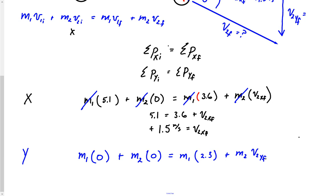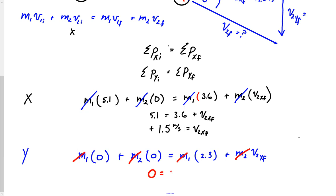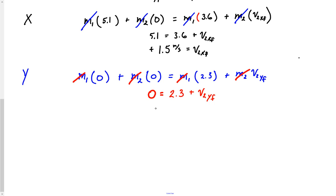Plus m2, and what we are looking for is velocity 2's y final. And once again, what's beautiful is the m's all cancel out, which is kind of cool because that means that 0 is equal to 2.3 plus velocity 2 y final, which, wow, that just means negative 2.3 meters per second is my velocity 2 y final.